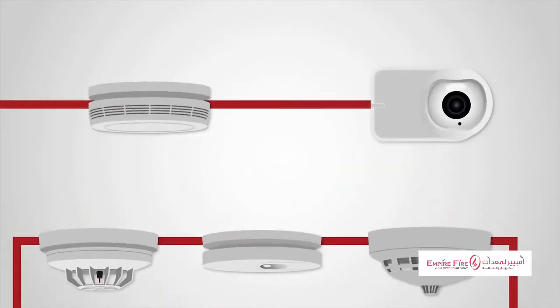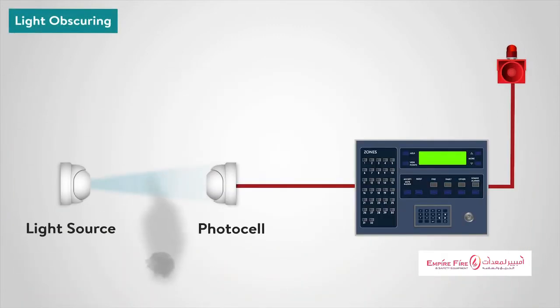In the light obscuring smoke detector, smoke interferes with a light beam between a light source and photocell. The photocell measures the amount of light it receives. The variation in photocell output is used to initiate an alarm.